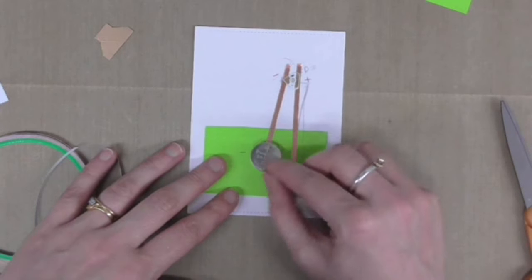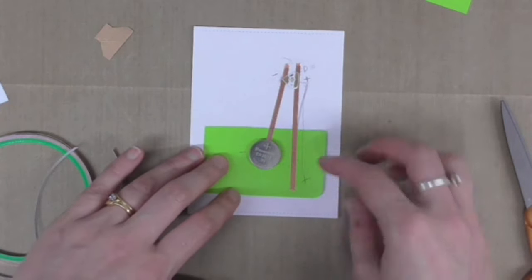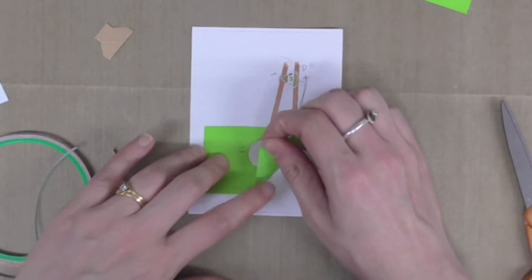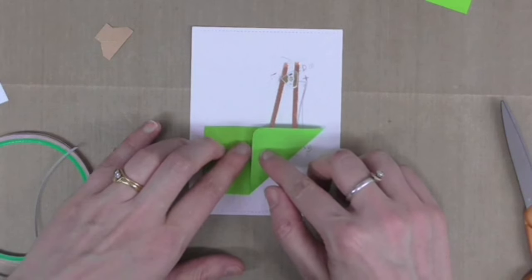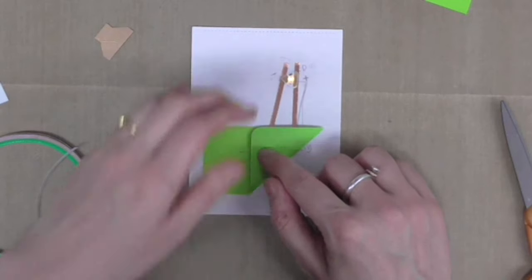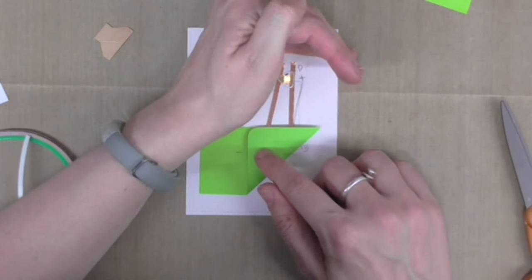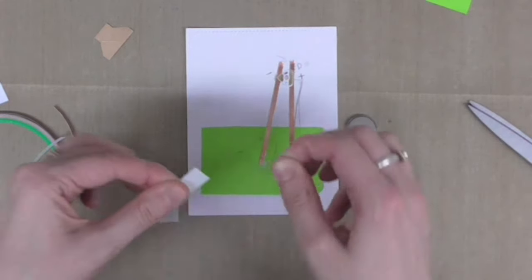So I've marked on the top and the bottom on the post-it note there which way around I want my battery to go, and you can test it out and that works fine. You can see how that lights up when I press down on the top of the green paper.